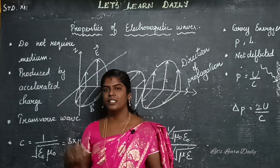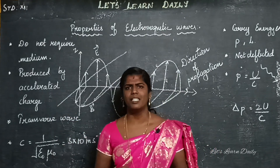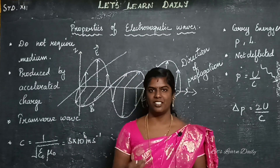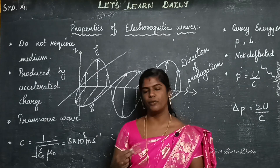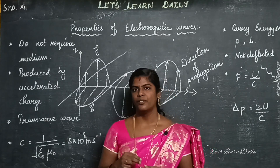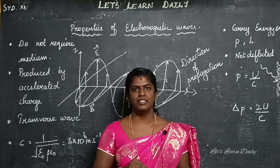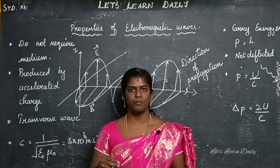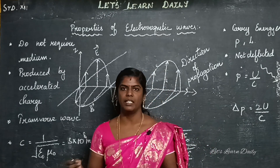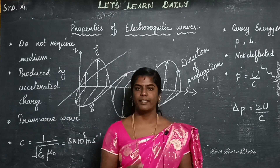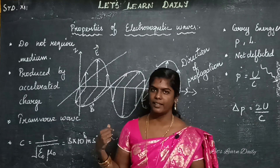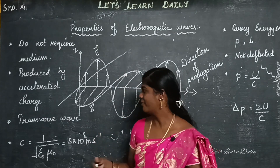What produces electromagnetic waves? Accelerated charges produce electromagnetic waves. When the charges are moved, that produces the electromagnetic wave.